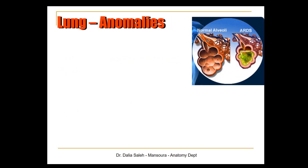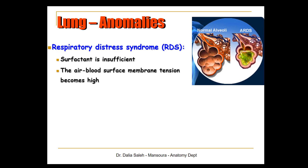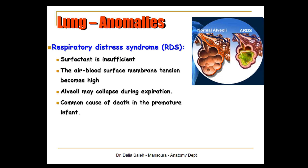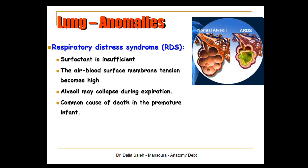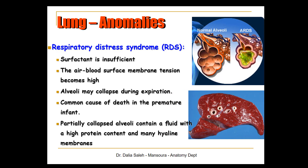Another serious anomaly in the lungs is called respiratory distress syndrome. This develops because surfactant is insufficient, causing the air-blood surface membrane tension to become very high, so the alveoli collapse during expiration. This is a common cause of death in premature infants due to the lack of surfactant secretion.